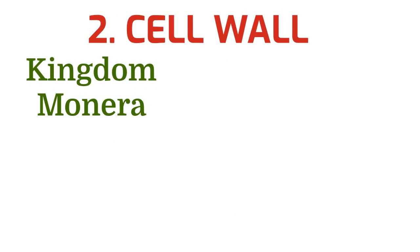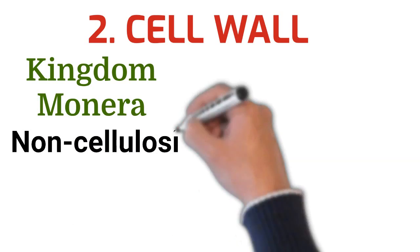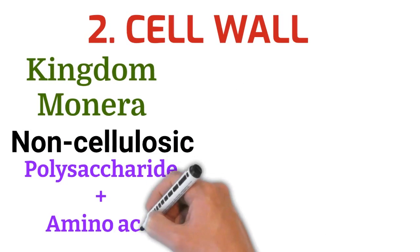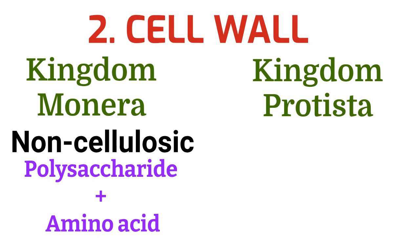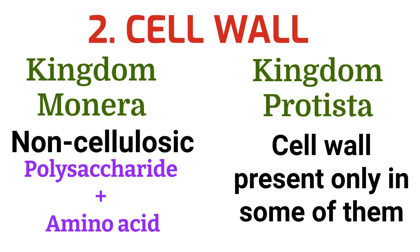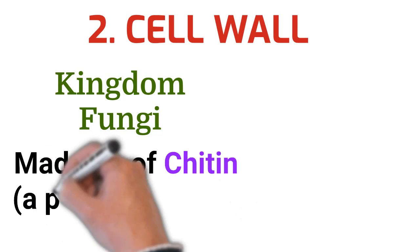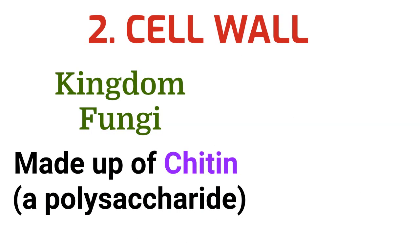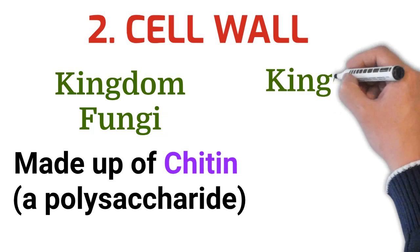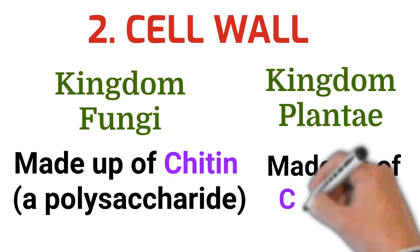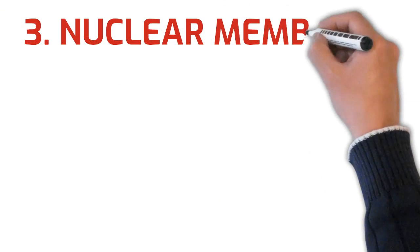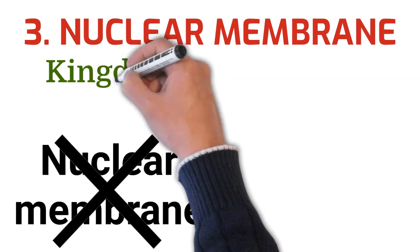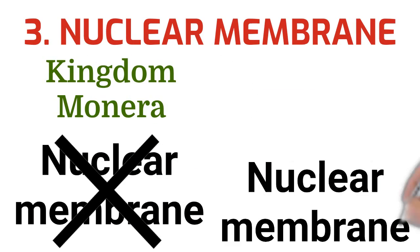The cell wall of Kingdom Monera is non-cellulosic and is made up of polysaccharide and amino acid. In Kingdom Protista, cell wall is present but only in some of them. Cell wall in Kingdom Fungi is made up of chitin, a polysaccharide. Cell wall in Kingdom Plantae is made up of cellulose. Third, the nuclear membrane — it is absent in Kingdom Monera and present in the other four kingdoms.